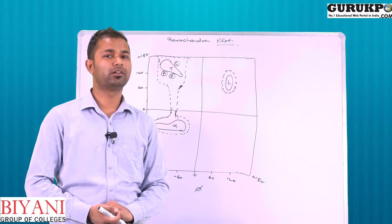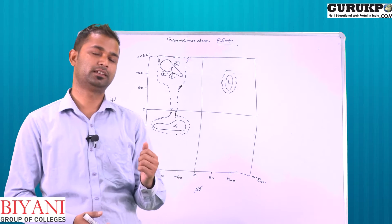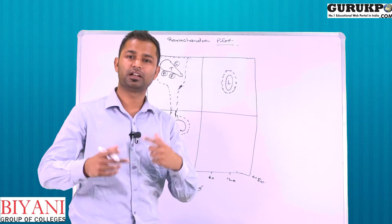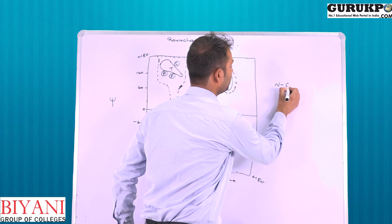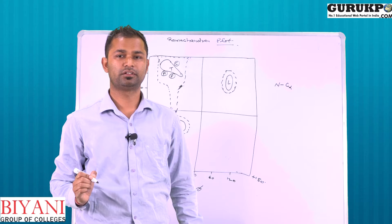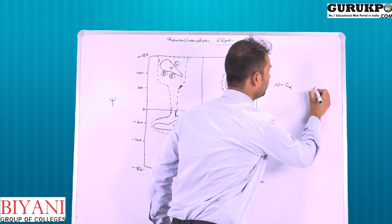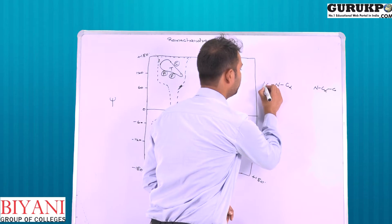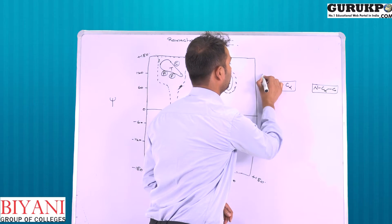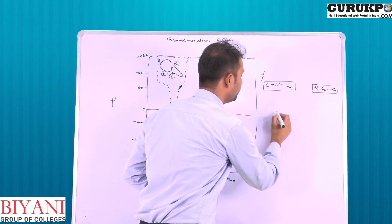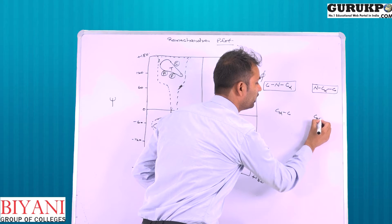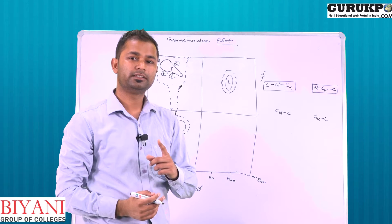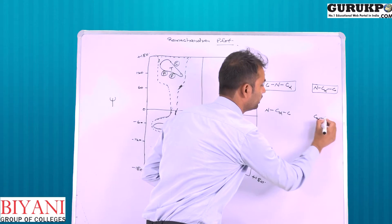What is the Ramachandran Plot? This plot is between the dihedral angles phi and psi. The phi angle is actually the rotation around the N–C-alpha bond — it is the angle between two planes. The psi angle is the rotation around the C-alpha–C bond, and psi is also the angle between two planes.